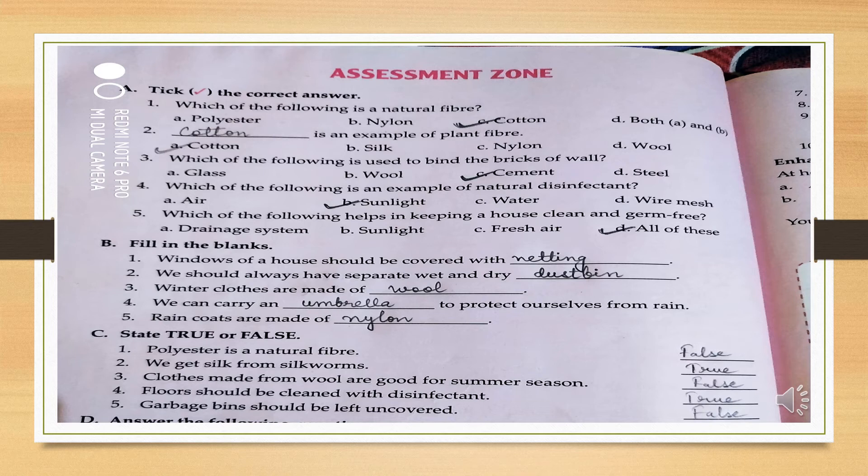Second question: we should always have separate wet and dry dustbin or garbage bin. Third: winter clothes are made of wool. Fourth: we can carry an umbrella to protect ourselves from rain. Fifth: raincoats are made of nylon.